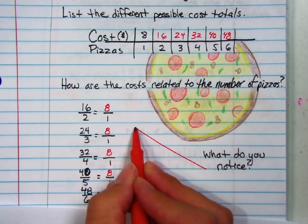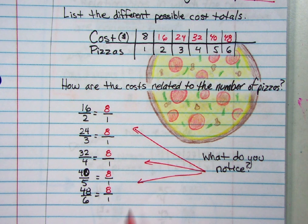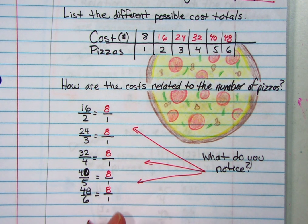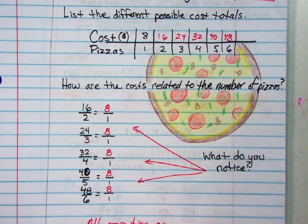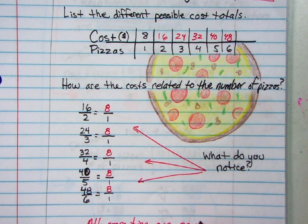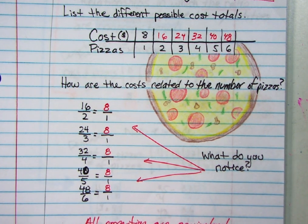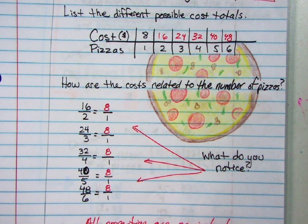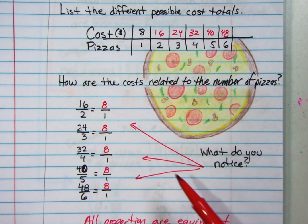What do we notice about these things? We should notice that all of the relationships, all proportions, are equivalent. They are the same. So that's going to be important. So we could say that these are proportional. What is actually proportional is the relationship between the pizzas, the number of pizzas, and the costs.